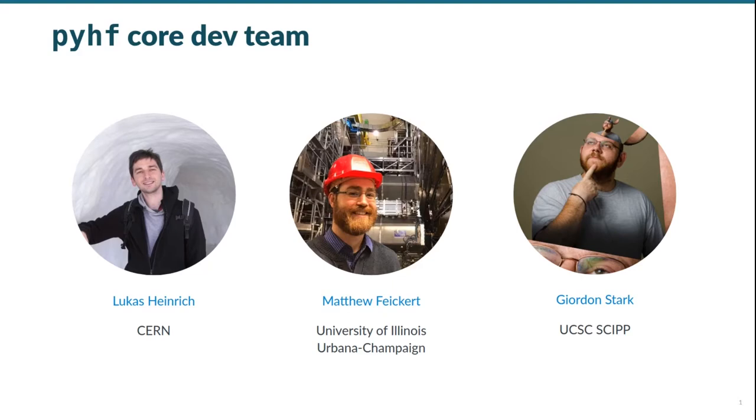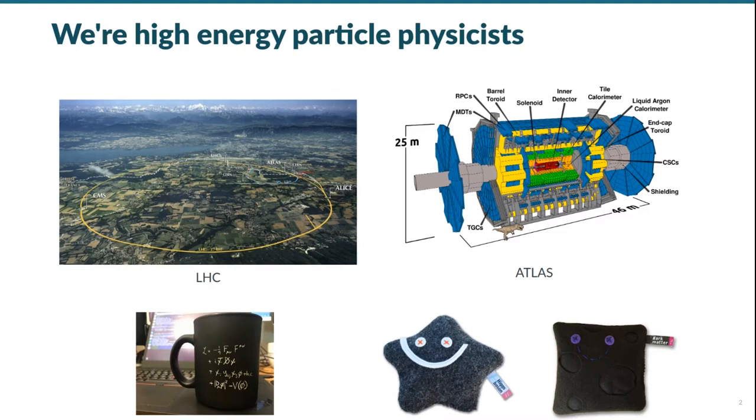We're all experimental high-energy particle physicists that work together on an experimental collaboration with 3,000 of our closest colleagues called ATLAS that's located just outside of beautiful Geneva, Switzerland, at CERN's Large Hadron Collider, the LHC. Here you can see the obligatory picture of the LHC's huge 27-kilometer circumference drawn over the Swiss-French countryside with markers indicating where the main experiments reside along the ring about 100 meters below ground.